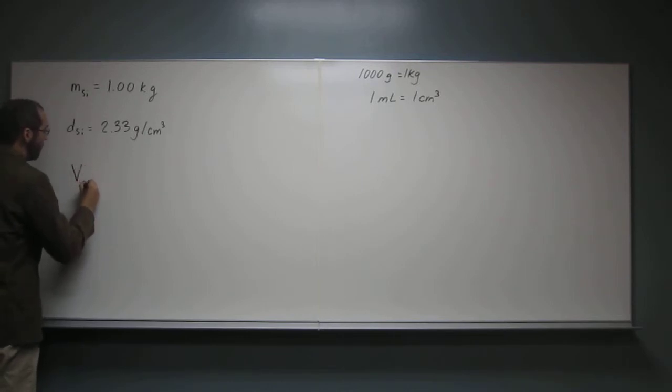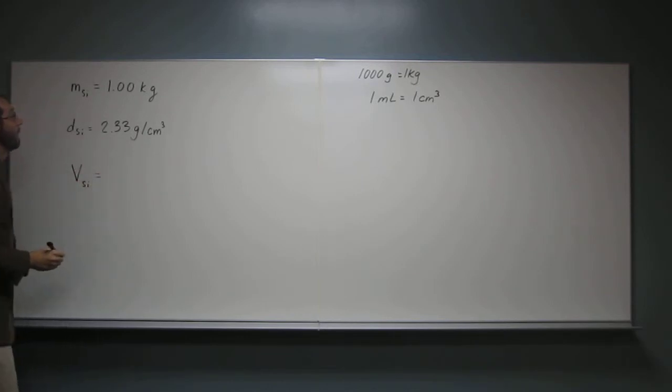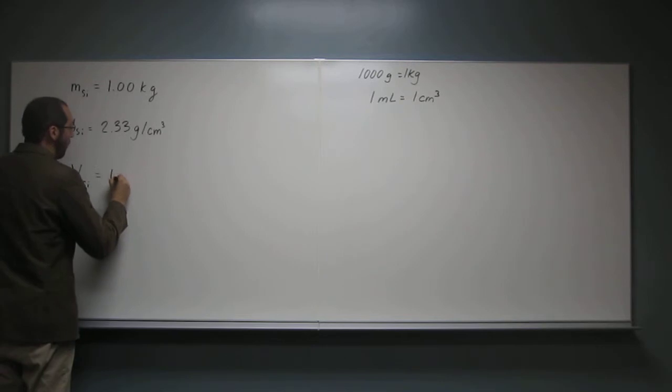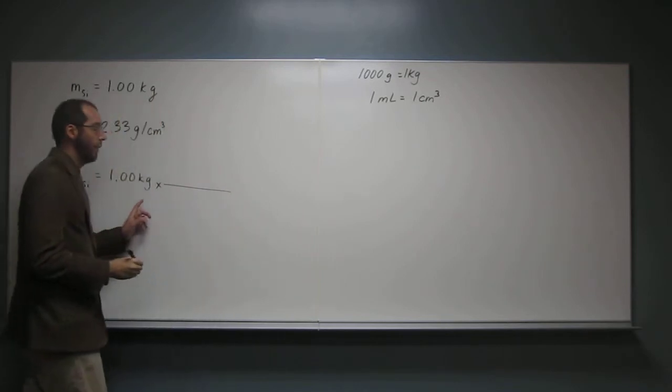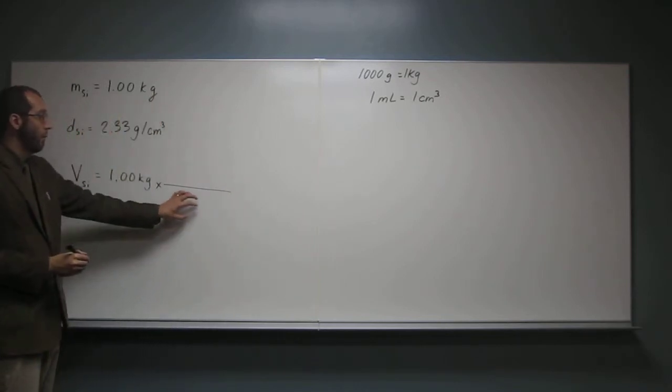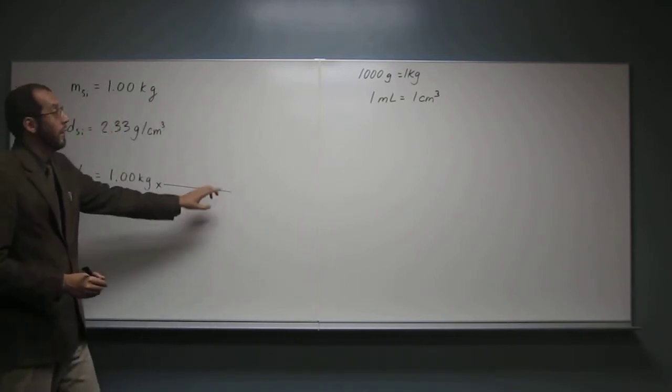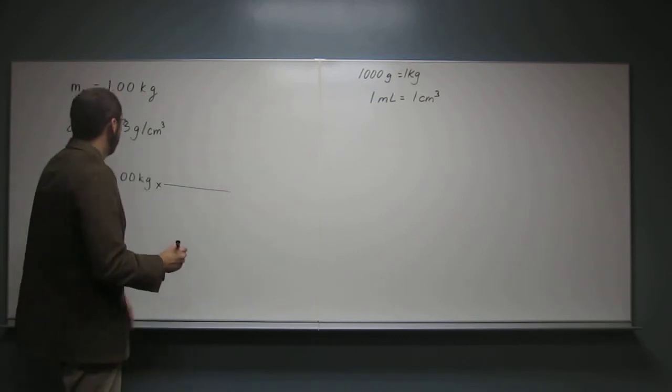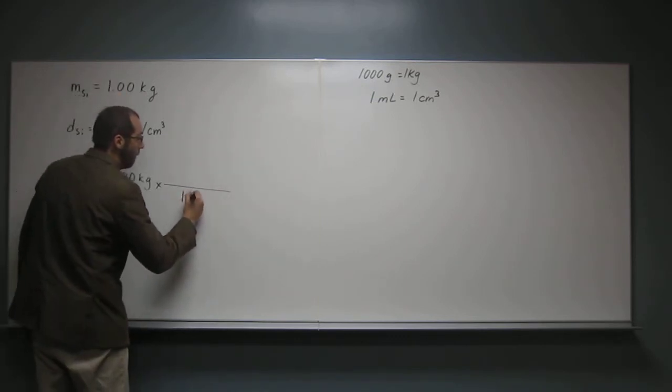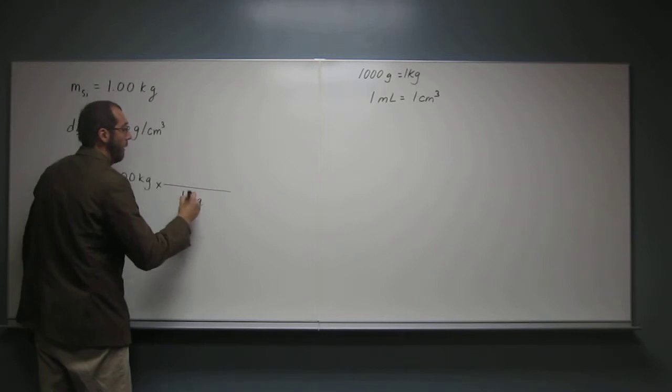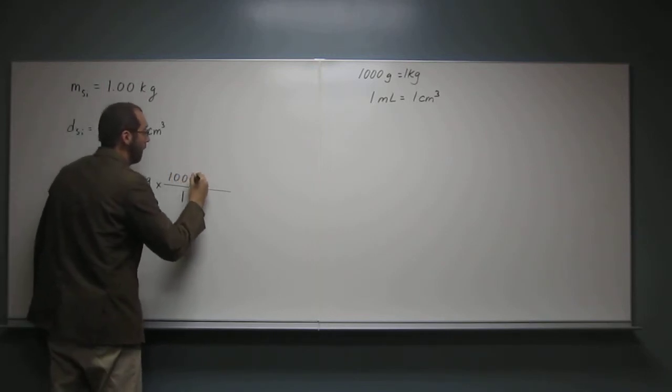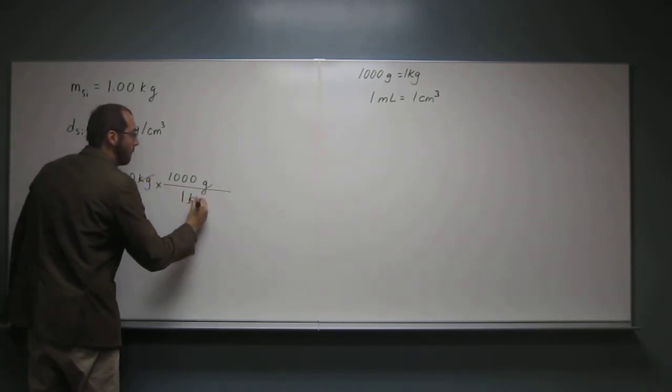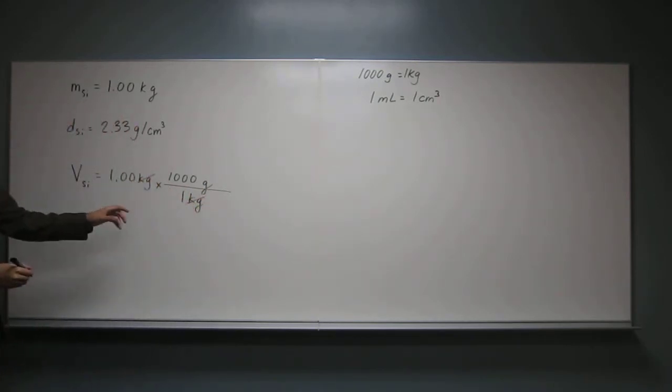So the volume of silicon is going to be 1.00 kilograms. And remember, we don't want it in kilograms, we want it in grams. So we're going to put kilograms down here using that conversion factor there. So what do we put? 1 kilogram, and what do we put up here? A thousand. A thousand grams. Like that. Watch. Kilograms cancels. So now we're in grams.